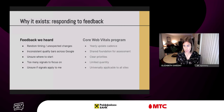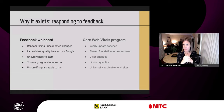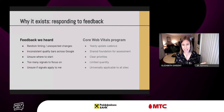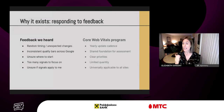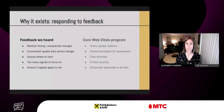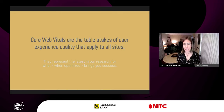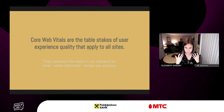For the random timing issue, we introduced a yearly update cadence. For inconsistent quality bars, we created a shared foundation for assessment — Core Web Vitals is the common denominator across the board. We provide clear priorities: this is where you start. There's a limited quantity — not 30 Core Web Vitals, but a smaller subset that helps you prioritize. And it's universally applicable to all sites, broader than any one industry vertical or use case.